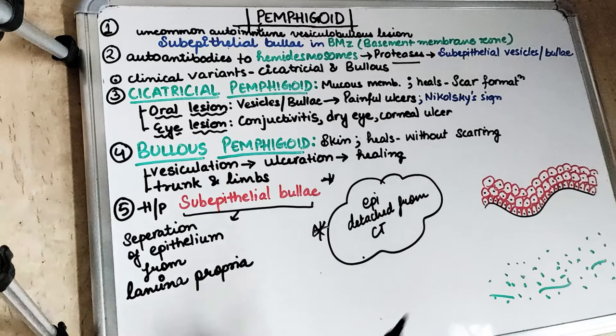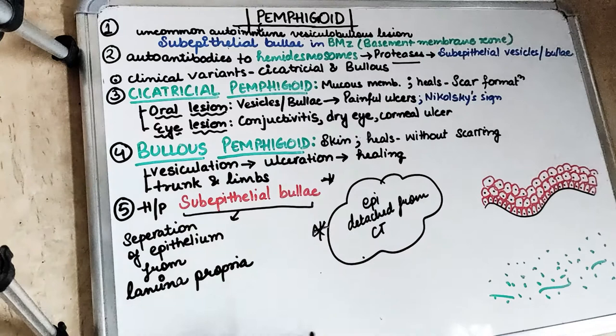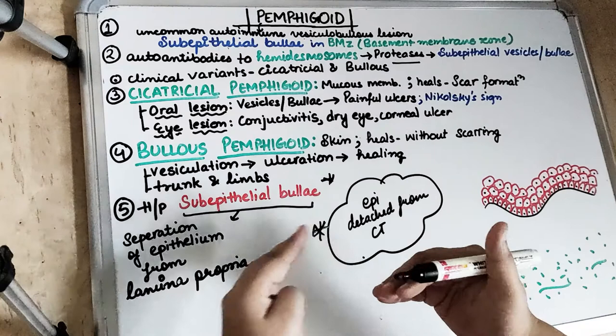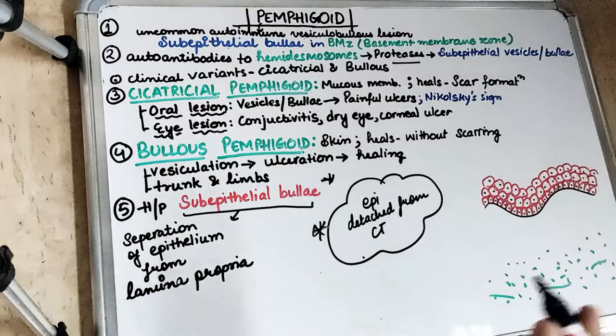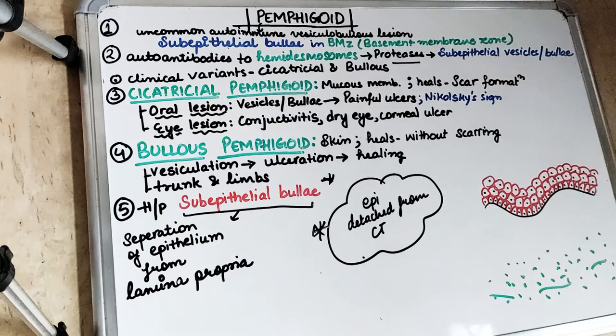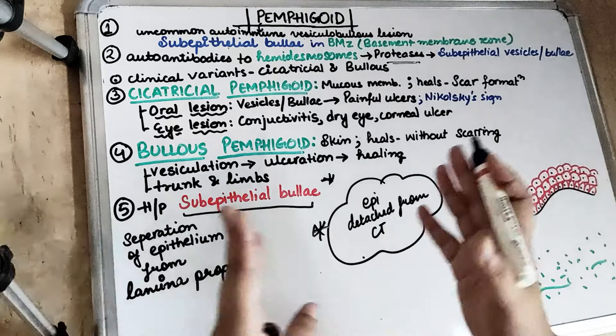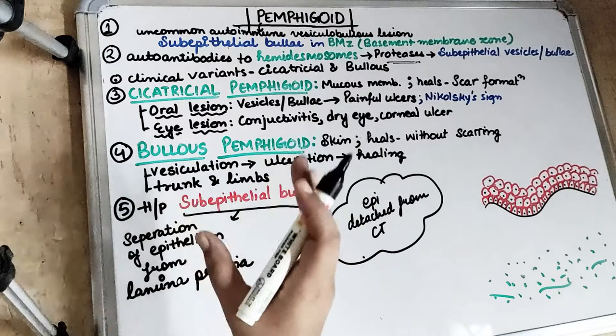Pemphigoid is a sub-epithelial bulla in the basement membrane zone. It is an autoimmune disease in which the body produces autoantibodies against the basement membrane zone. The hemidesmosomes, which connect the epithelial cells to the connective tissue via the basement membrane, are targeted. Autoantibodies form against these hemidesmosomes, triggering inflammatory cells and chemotactic factors. These inflammatory cells release proteolytic enzymes — especially proteases — which destroy the hemidesmosomal junction, causing separation of the basement membrane, and resulting in sub-epithelial vesicle and bullae formation.